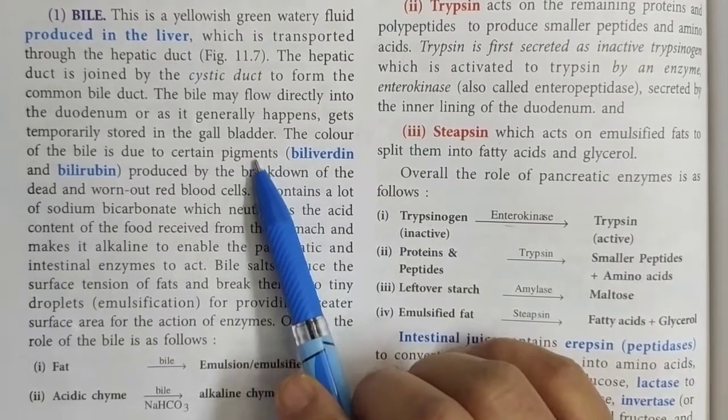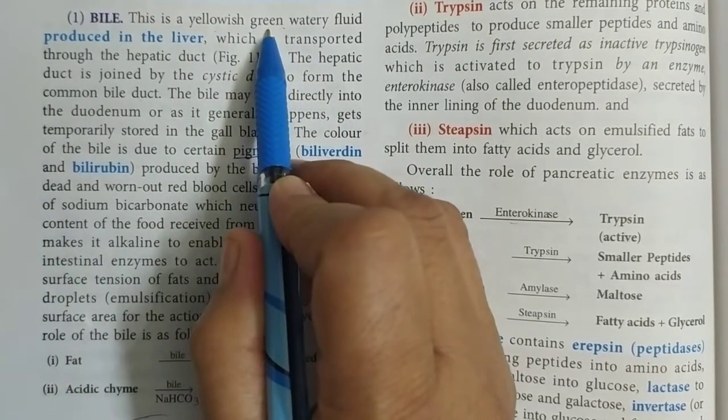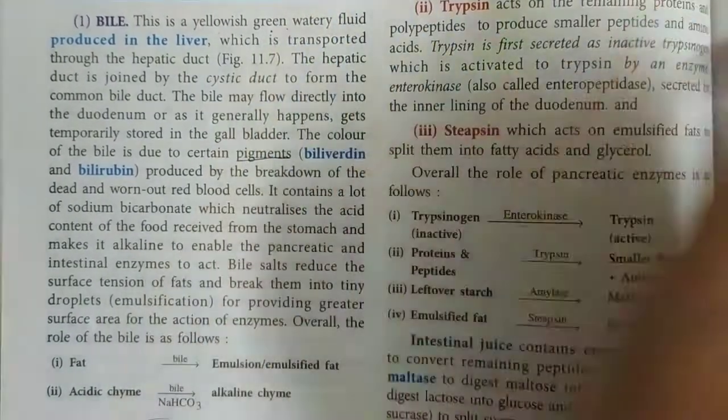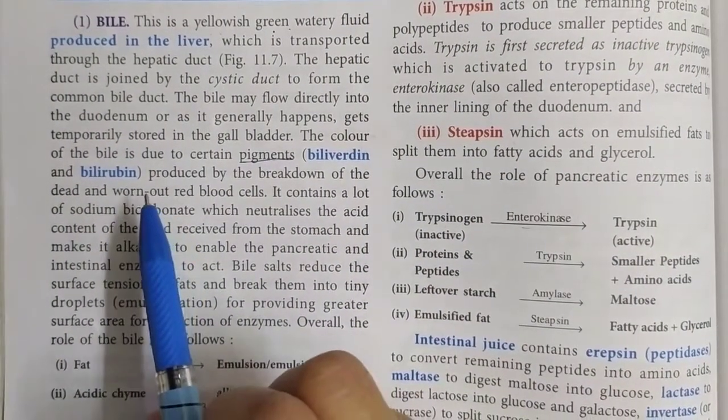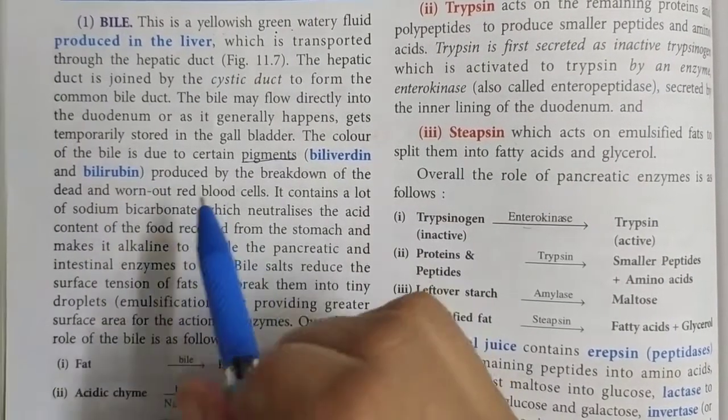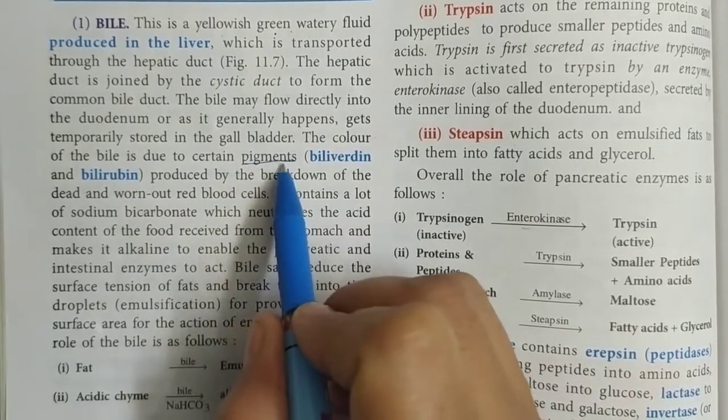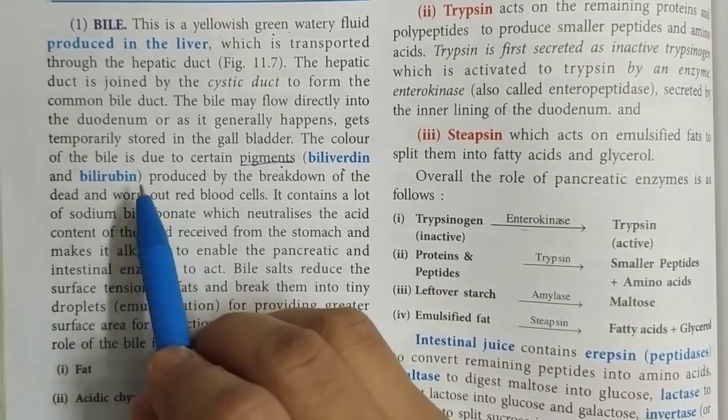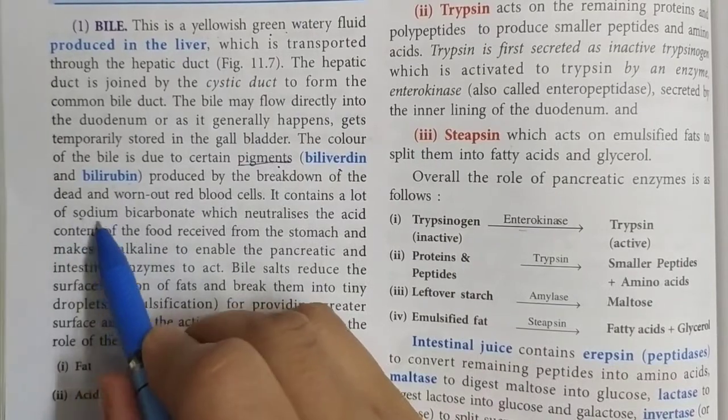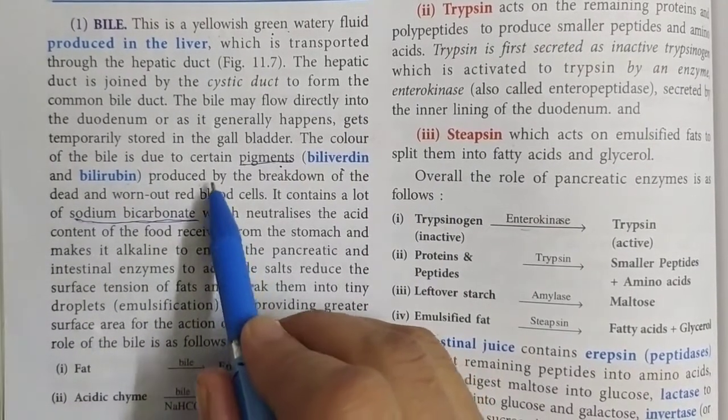Now this color of the bile is because of two pigments. As they have written, it is yellowish green color. If you ask from where this yellowish green color has come, it is due to the breakdown of red blood cells. Children, you all have read that in liver old red blood cells are broken down. You know that red blood cells have a lifespan of 120 days. So that means after every 120 days many red blood cells are broken down in the liver. When they break down, certain pigments are released. And these pigments are called biliverdin and bilirubin. These are the pigments which give the coloring substance.